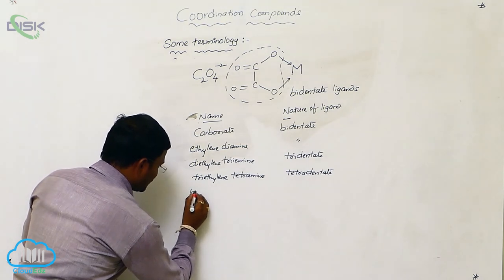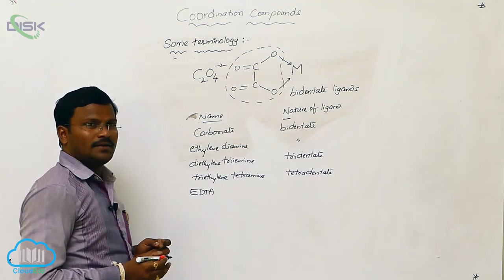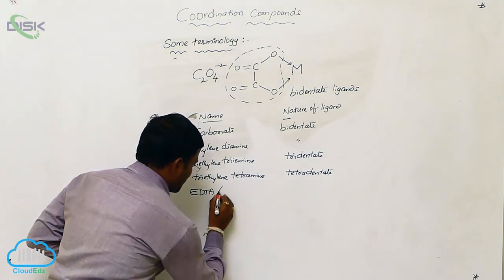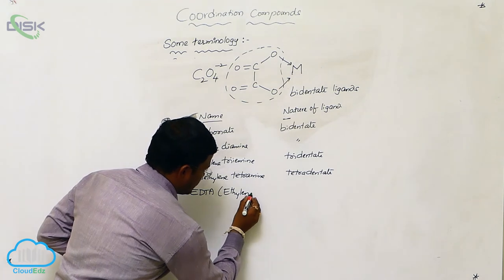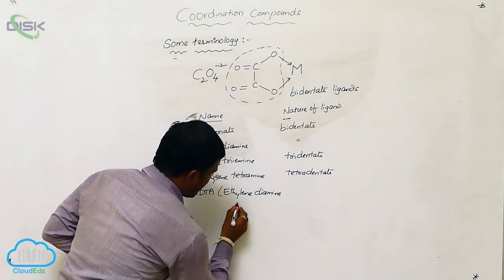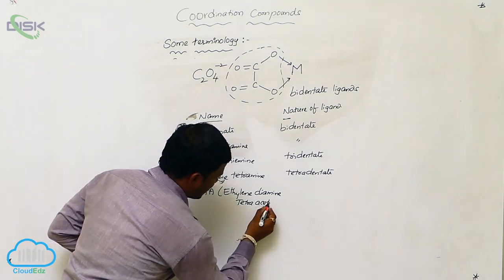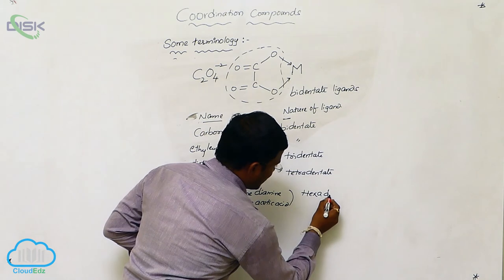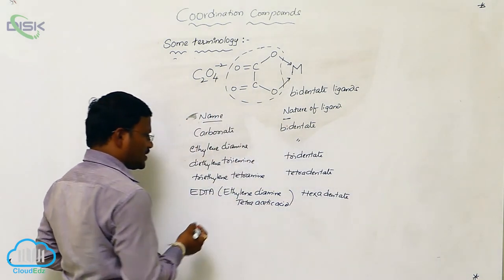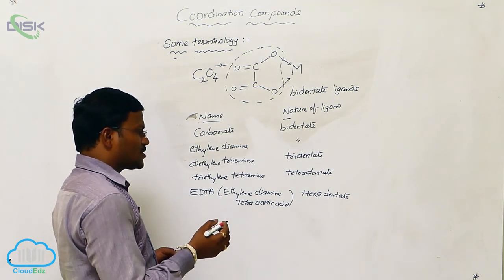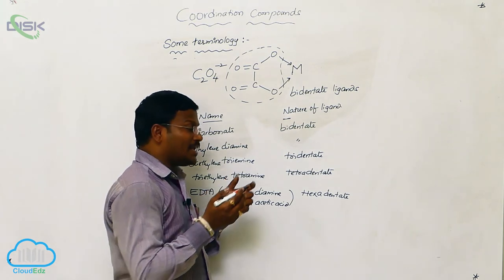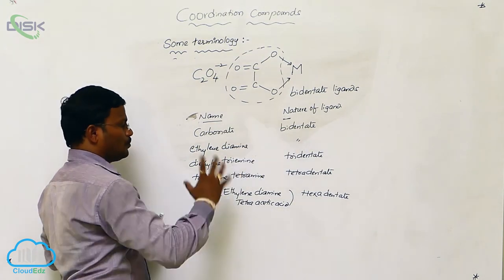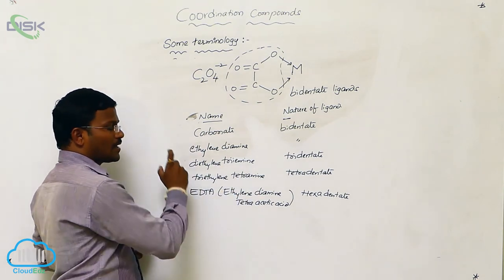EDTA, ethylenediamine tetraacetic acid, is a hexadentate ligand. That means six atoms in ethylenediamine tetraacetic acid can donate coordination covalent bonds with the central metal atom or ion, providing different coordination numbers to the central atom or ion.